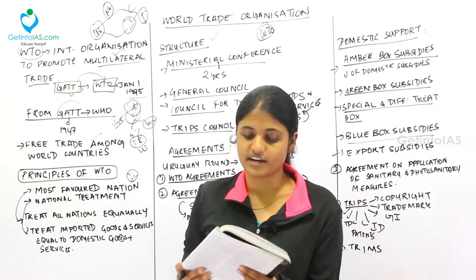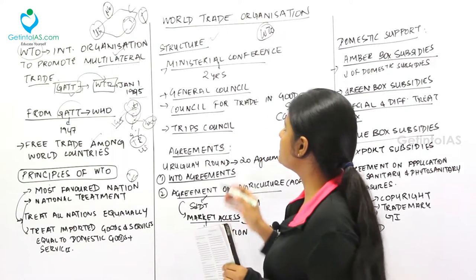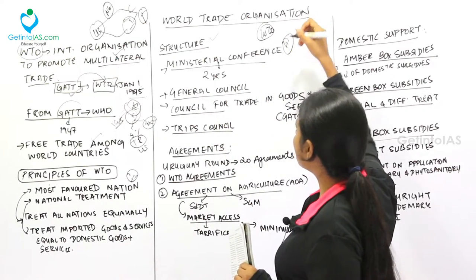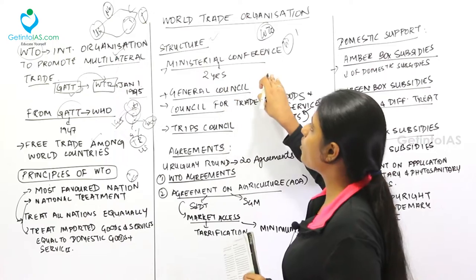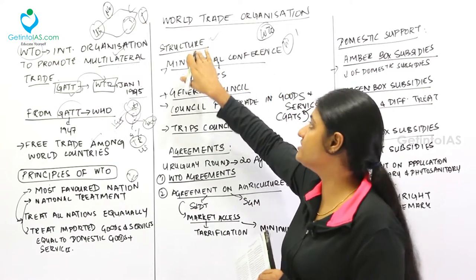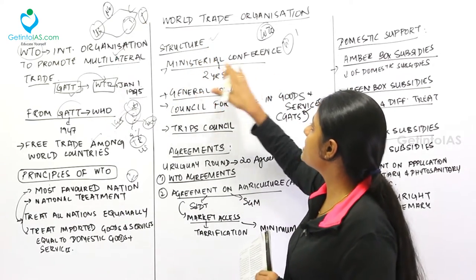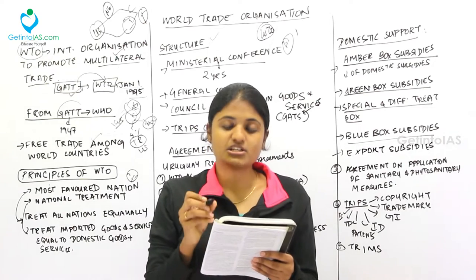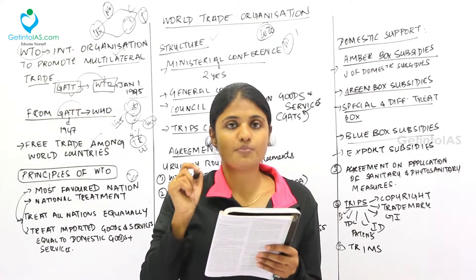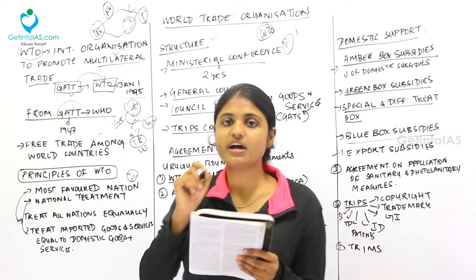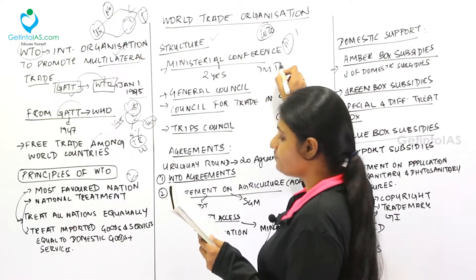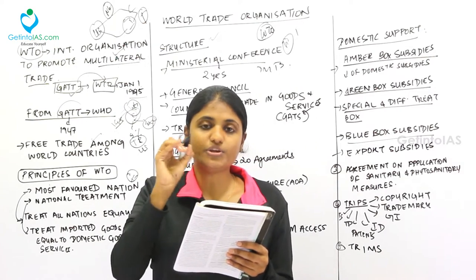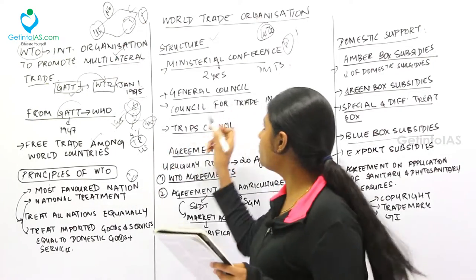Moving to the structure of the WTO, the topmost apex body is the Ministerial Conference. It is the top-level decision-making body and meets once every two years.